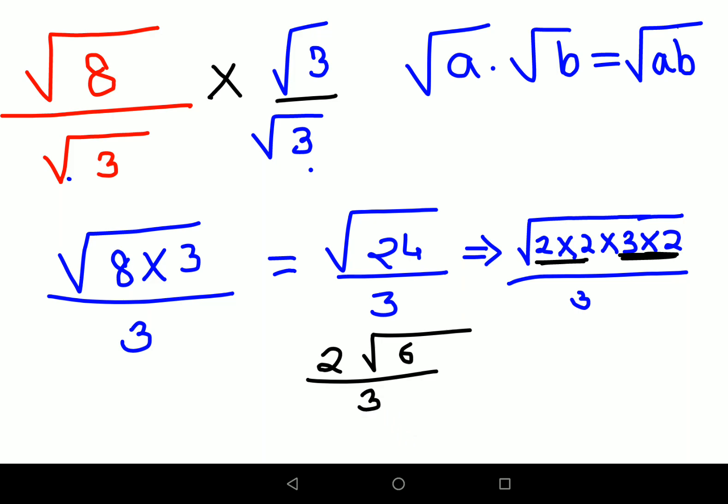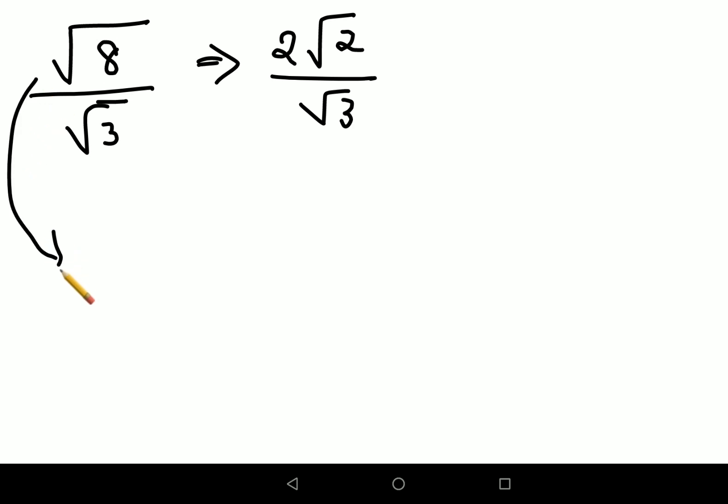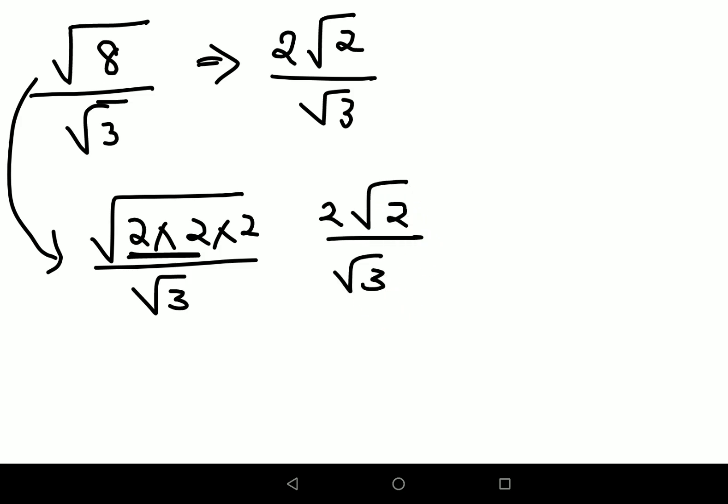Now like I said, we'll come to the tricky one, but it's actually much easier. √8 upon √3: instead of first dividing, we can directly write this as 2√2 upon √3. This is for those people who have a bit of hang on their square roots and everything—they know what is a perfect square, perfect cube. This 8 is nothing but 2 times 2 times 2 upon √3. Now obviously we'll take one pair of two out, so then you will just get one single 2, and then you will have 2√2 upon √3.